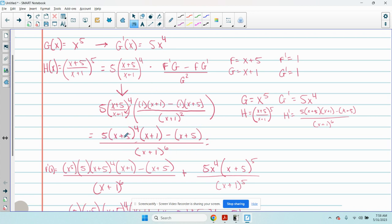What you should have done is distributed this thing to both terms inside the parentheses, the x plus 5 to the fourth to this thing, as well as x plus 5 to the fourth to this thing.